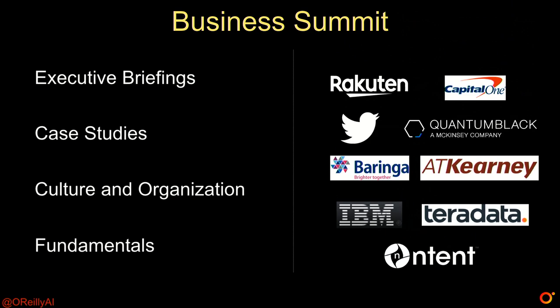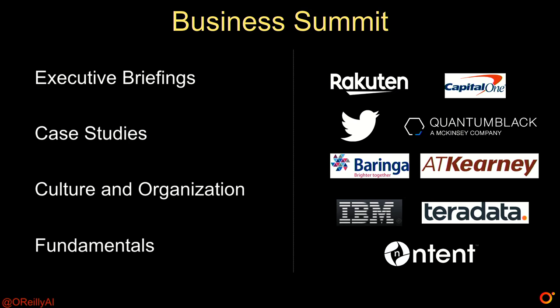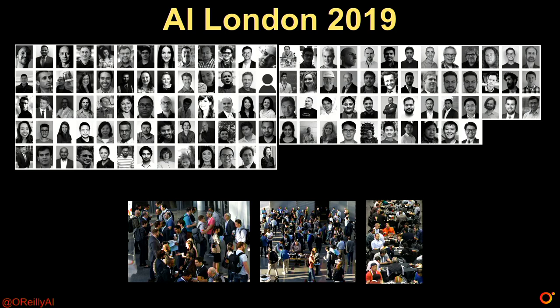In a survey we conducted earlier this year about AI adoption in the enterprise, respondents cited culture, organization, and lack of skilled people among the leading reasons that held back their adoption of these technologies. We're excited to have another great set of speakers for our business summit over the next two days. For example, later this morning, Baman Bamani of Rakuten will describe best practices and strategies that can enable companies to unlock the true potential of AI. We have another outstanding program for you, and over the next two days there will be many more great sessions — we've barely scratched the surface here — that will be critical to sustaining the use of AI within your company.